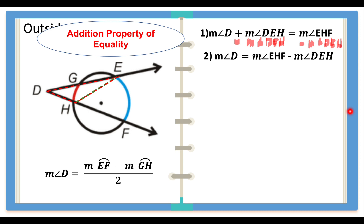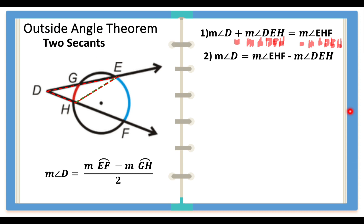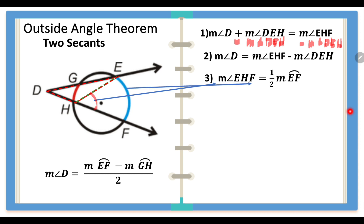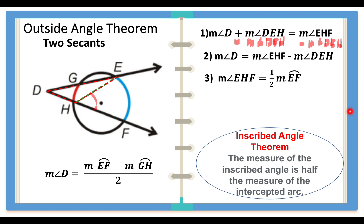Now we need the measure of angle EHF and the measure of angle DEH. The measure of angle EHF is equal to one-half the measure of arc EF. Where is angle EHF? It is this angle in the figure, and the corresponding arc is the blue arc. This is justified by the inscribed angle theorem, which states that the measure of an inscribed angle is half the measure of its intercepted arc. Angle EHF is the inscribed angle and arc EF is the intercepted arc.